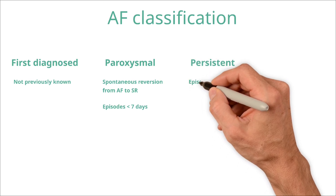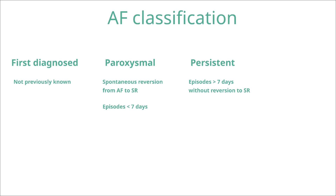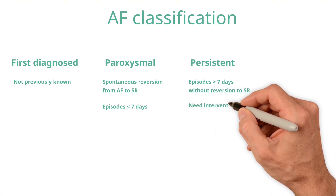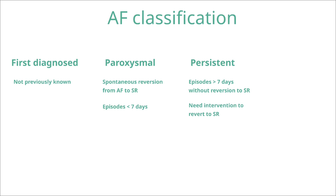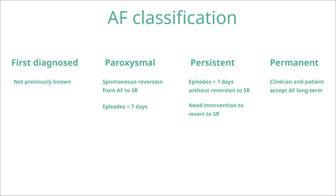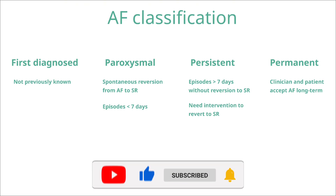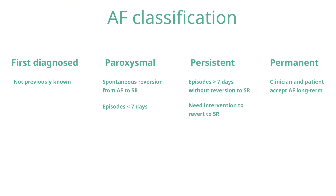Persistent AF is where AF lasts for more than seven days and is not self-terminating. Patients require an intervention to restore sinus rhythm, either electrical or chemical, otherwise they would remain in AF. Permanent AF is where patients remain continuously in AF, and the physician and patient have jointly decided that no further attempts will be made to restore sinus rhythm. This classification is important as it determines how we approach the management of atrial fibrillation.